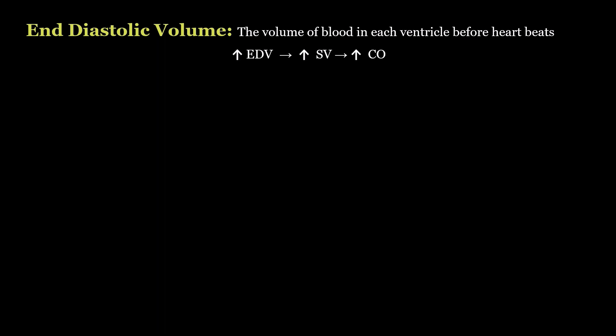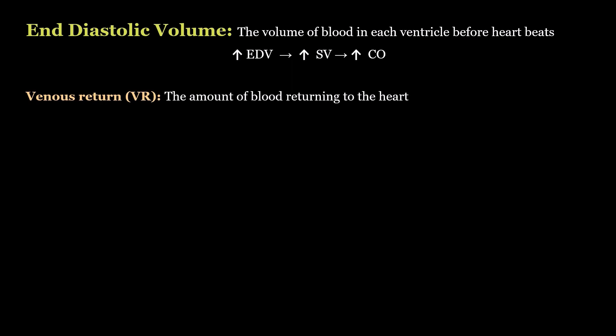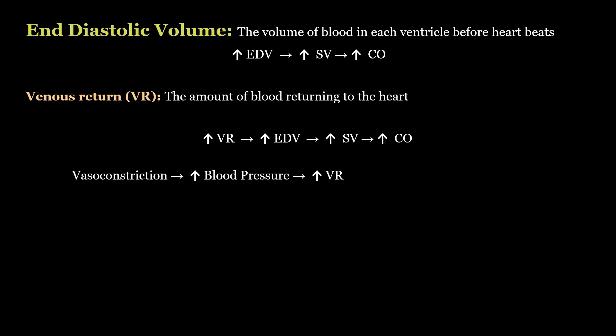The major factor affecting end-diastolic volume is venous return, which is the amount of blood returning to the heart. If my venous return goes up, my end-diastolic volume obviously also goes up — more blood returning means more volume at the end of relaxation. Vasoconstriction will increase your blood pressure and increase venous return, therefore helping to maintain cardiac output.